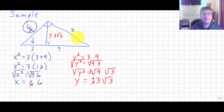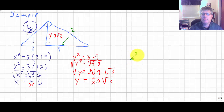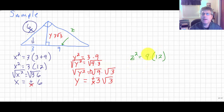Finally, z is the other leg on the right-hand side. z squared equals its nearest side — 9 is the nearest side, while 3 is far away over on the other side. So z squared equals its nearest side 9 times the entire base, which is 3 plus 9, or 12.